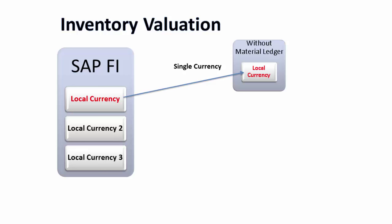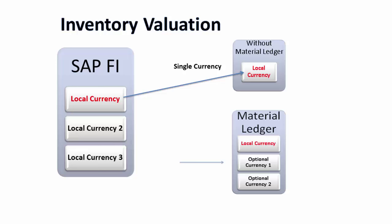If material ledger is used, then you have multiple currency options. You can use local currency — the company code currency — and then you have optional currency one and two, an additional currency. So material ledger can have three currencies and all your inventories can be valued in those three currencies, enabling multi-currency scenarios within the material ledger.